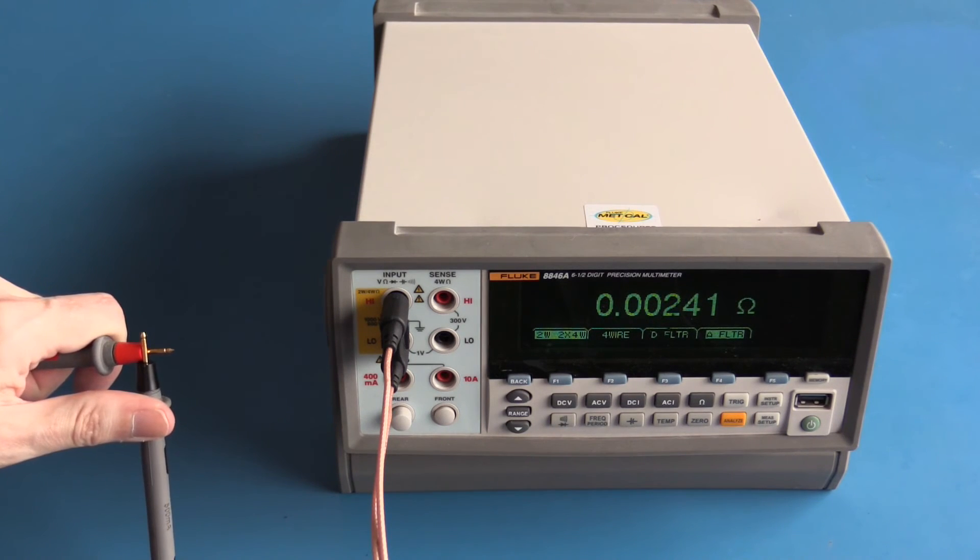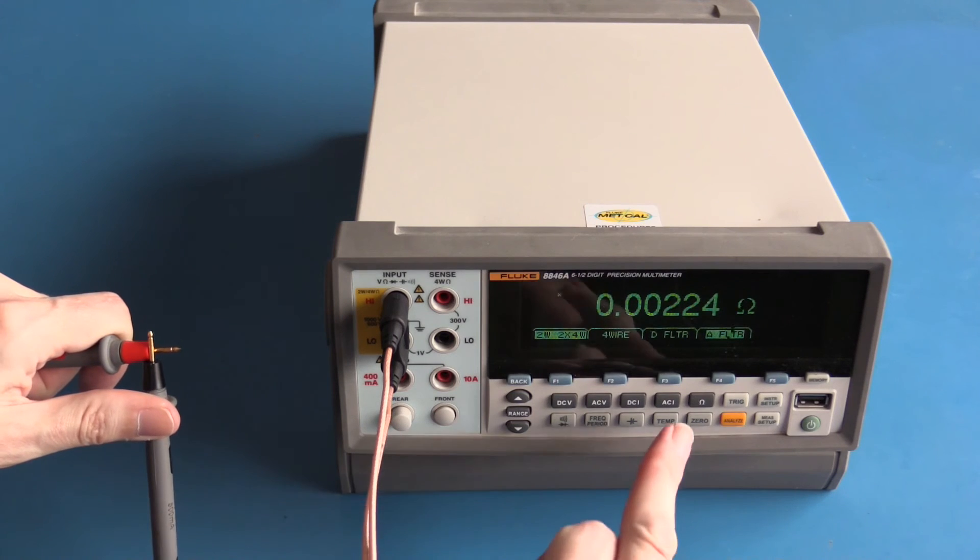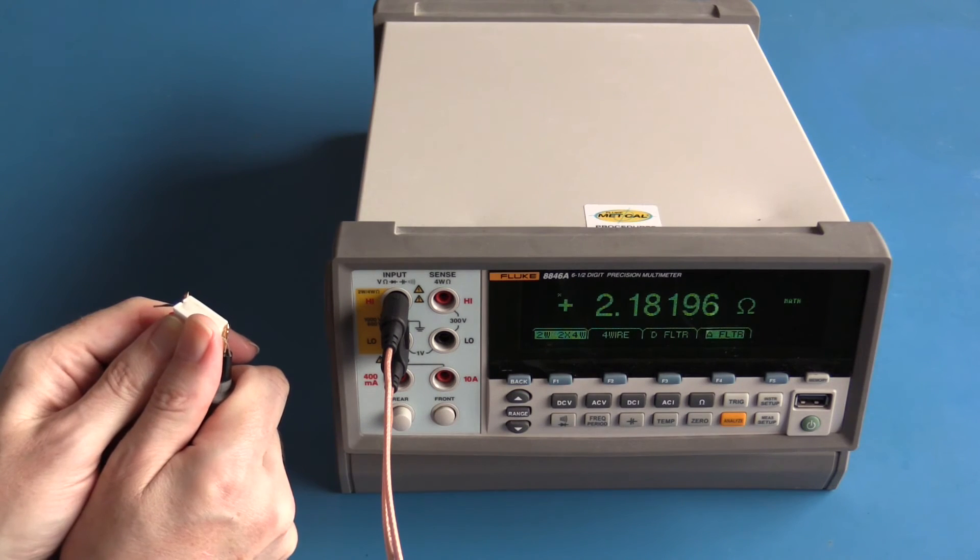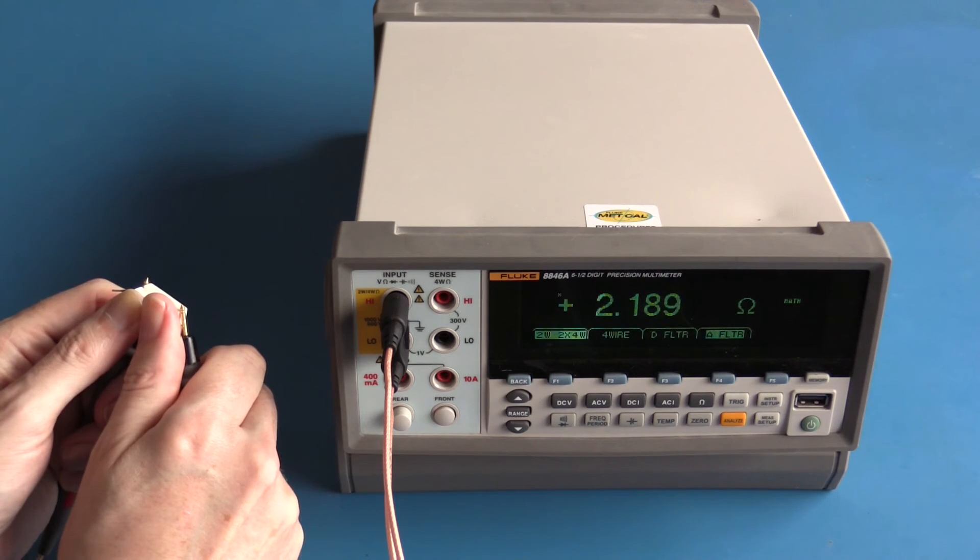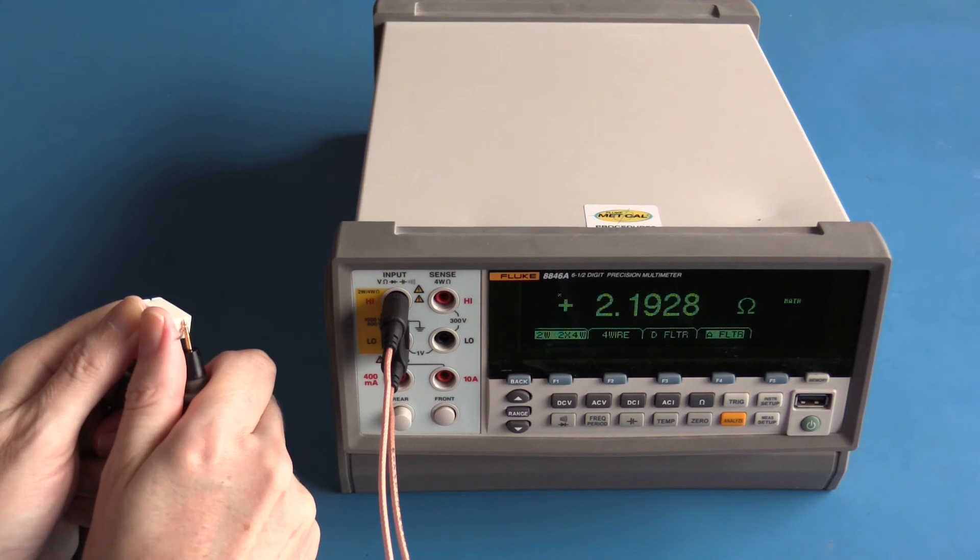Shorted together we have a little bit of an offset so we'll just zero that out again. I'm measuring that resistor at approximately 2.18 ohms in its highest resolution. Lowest resolution is somewhere around 2.18, 2.19.